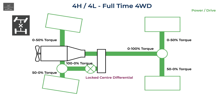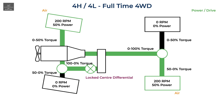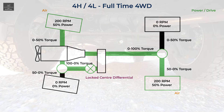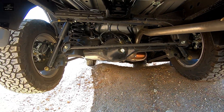By locking the center differential in a full-time four-wheel drive, or engaging 4-high or 4-low in a part-time four-wheel drive, the torque can be varied between front and rear drive shafts and differentials depending on where it is needed. However, because we still have open front and rear differentials, we still have an even torque split across those differentials. For example, if the vehicle is in a diagonal situation where the front right and rear left wheels are in the air, all the power will be sent to those wheels — so in this situation we still effectively have only two-wheel drive.